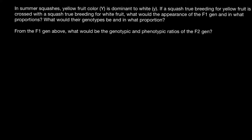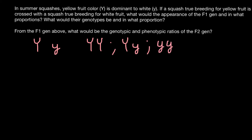We have two alleles here. One allele is dominant — capital Y — and another is recessive — small y. These two alleles can produce in a diploid organism three variants: capital Y capital Y, capital Y small y, and small y small y.